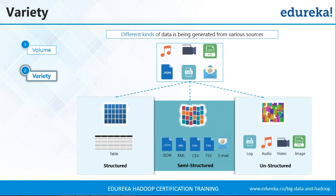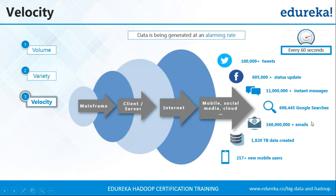It is also because of the speed of accumulation of all this variety of data that we come to our third V: velocity. Earlier we were using mainframe systems — huge computers but less data because fewer people were working with computers. As computers evolved and we moved to the client-server model, the internet boomed. Web applications increased over the internet and everyone started using them from both computers and mobile devices. More users, more appliances, more apps — and hence a lot of data.